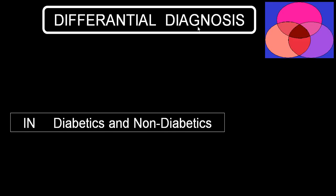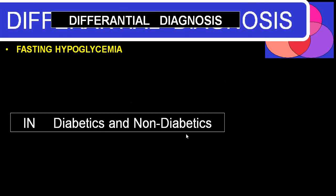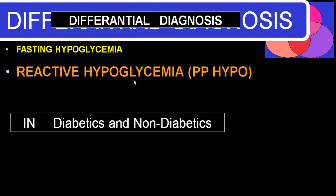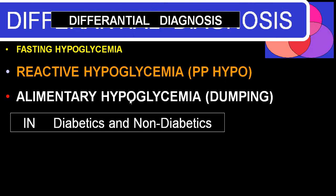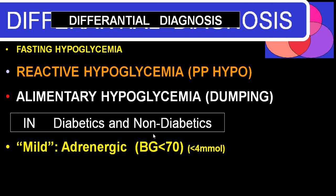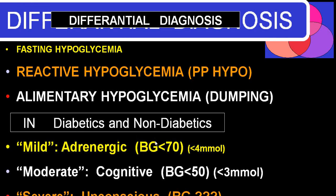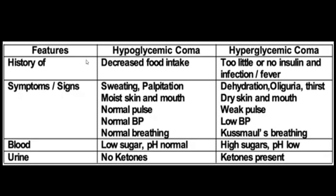For differential diagnosis, first differentiate between diabetic and non-diabetic, then fasting and postprandial. There is one more term — dumping syndrome, which we always use for postprandial. Also differentiate mild, moderate, and severe from history and laboratory investigations.